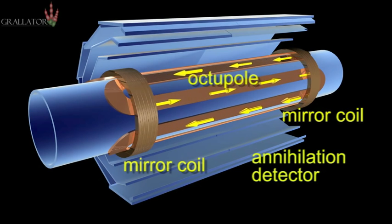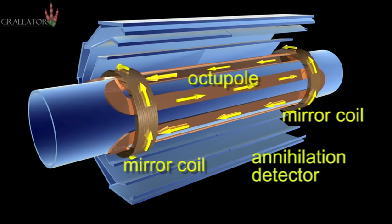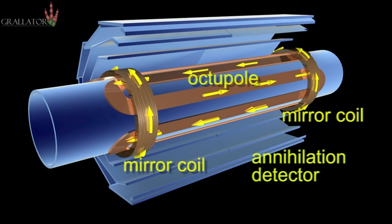The arrows indicate the direction of the current in the superconducting magnet coils. It's about 1,000 amperes for the octopole and about 700 in each mirror coil.